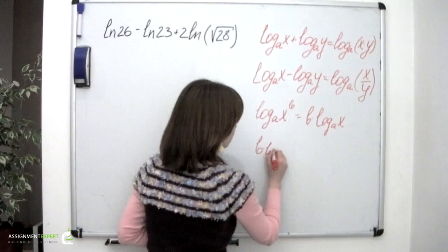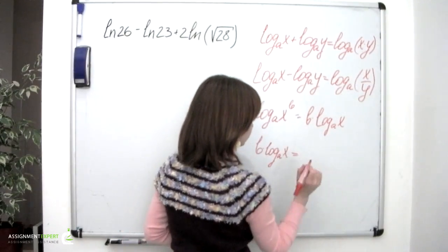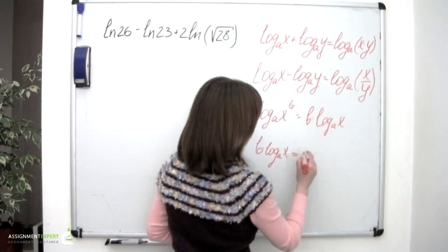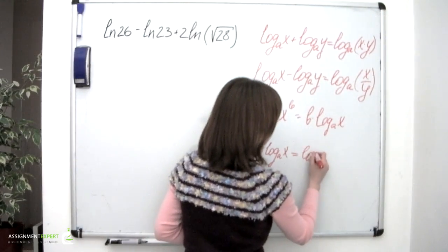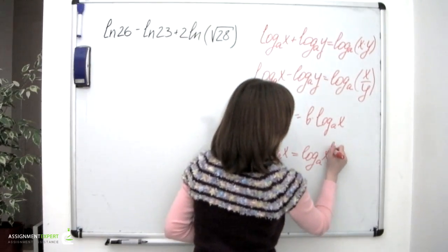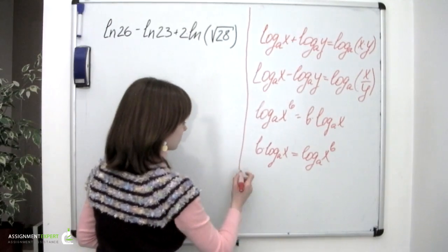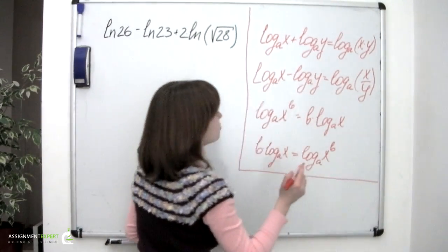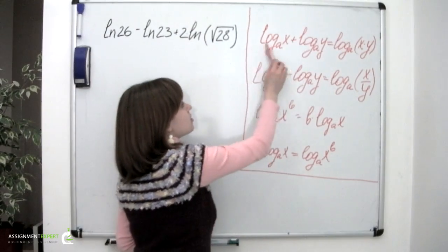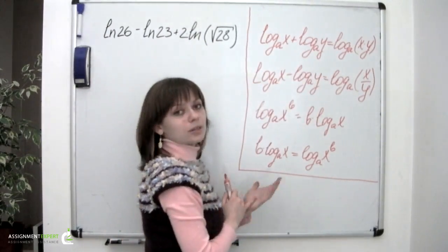b times logarithm base a of x is equal to logarithm base a of x raised to the power of b. What's important here is that the basis of the logarithms in these formulas must always be equal.